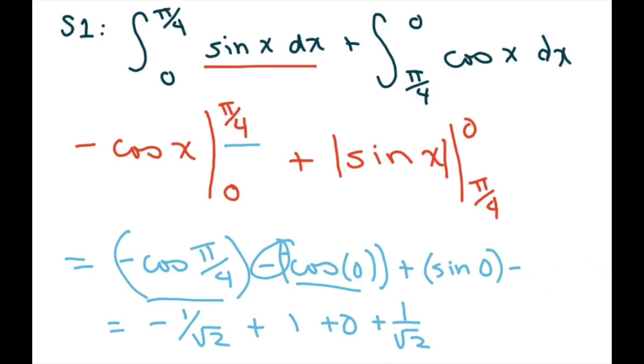Minus sine of negative pi over four. Alright, now what happens here is these two cancel out and so your final answer is one. And that's it. Thank you, have a nice day. Bye-bye.